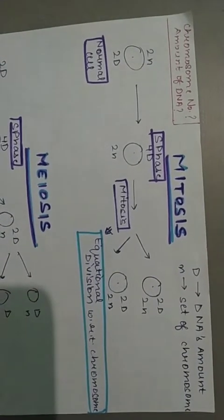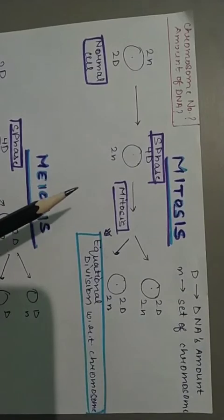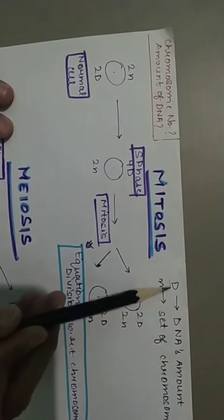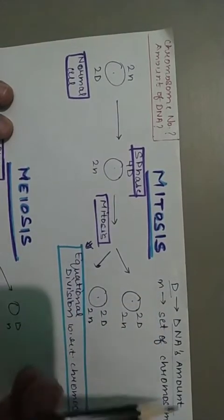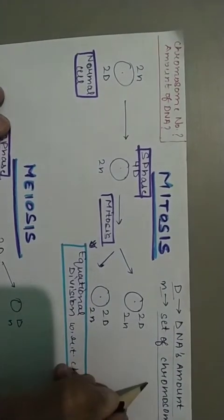So today we're gonna learn about what are the chromosome number and amount of DNA in different stages of mitosis and meiosis. First, here d represents DNA amount and n represents the set of chromosomes. As you know, humans have 2n, means two sets of chromosomes.